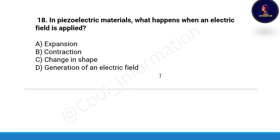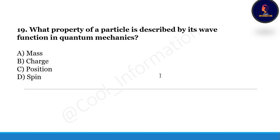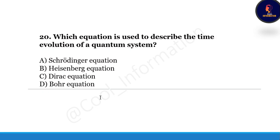Options for the piezoelectric question are: expansion, contraction, change in shape, or generation of an electric field. All these questions are important — do not miss even a single one, as each missed question decrements your marks by one. Correct option is C, change in shape. Next question: what property of a particle is described by its wave function in quantum mechanics — mass, charge, position, or spin? Correct option is position. Next question: which equation is used to describe the time evolution of a quantum system — Schrödinger equation, Heisenberg equation, Dirac equation, or Bohr's equation? Correct option is A, the Schrödinger equation.